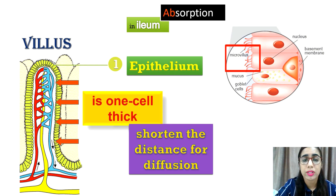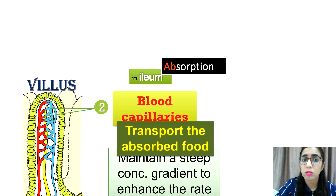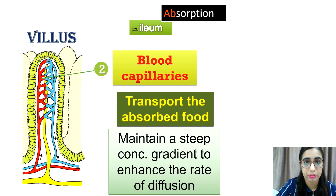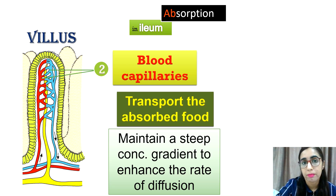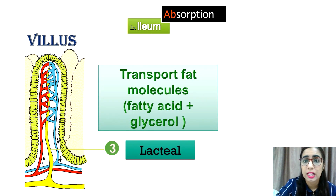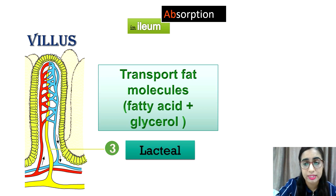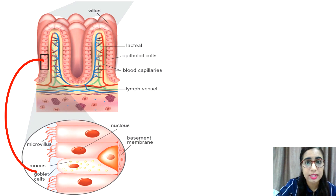The microvilli help to increase the total surface area for nutrient absorption. There is also a network of blood capillaries in each villus to transport nutrients from digested food into the blood circulatory system. In each villus, a lacteal can be found which functions to absorb nutrients such as lipids — fatty acids and glycerol — into the lymphatic vessel.